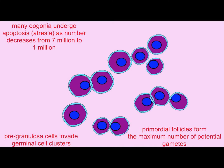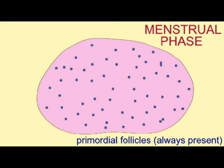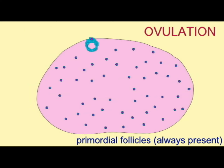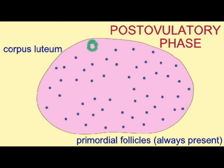The primordial follicles set the maximum number of potential gametes that a woman could develop in her lifetime at about 1 million. When they are exhausted, the ovary cannot produce any additional reproductive structures. Note that unlike sperm, which travels singly, the female oocyte will develop as part of a larger structure known as the follicle.